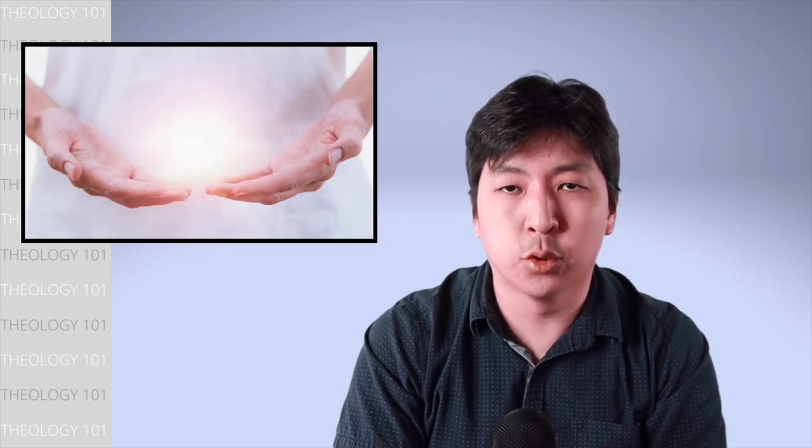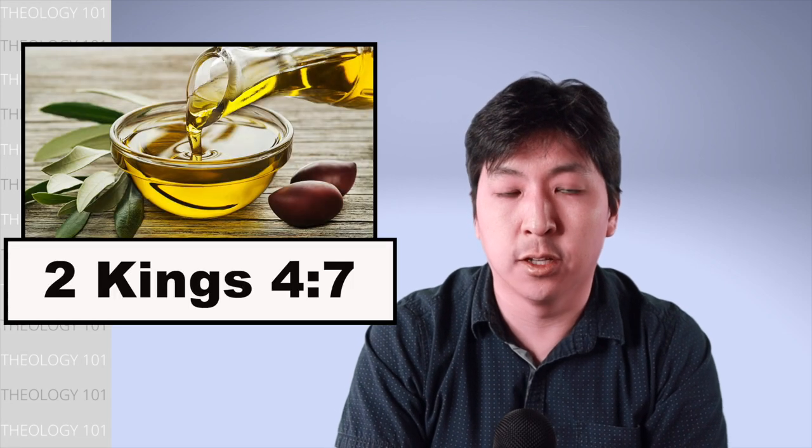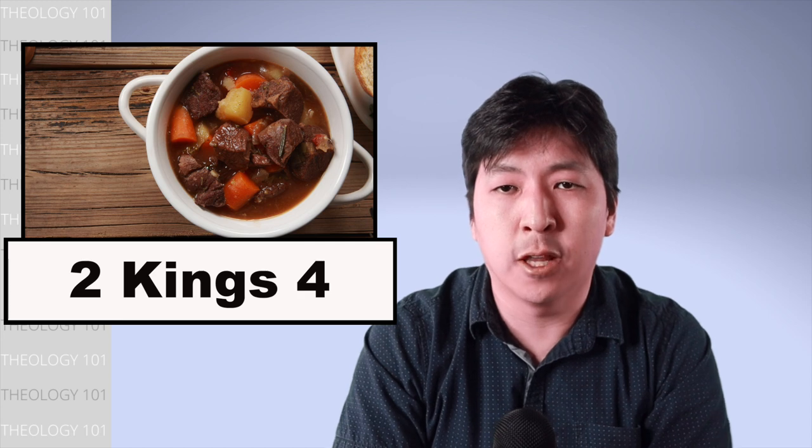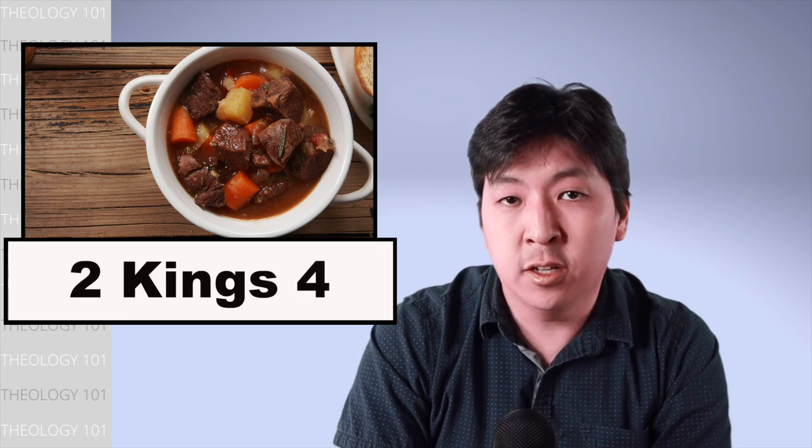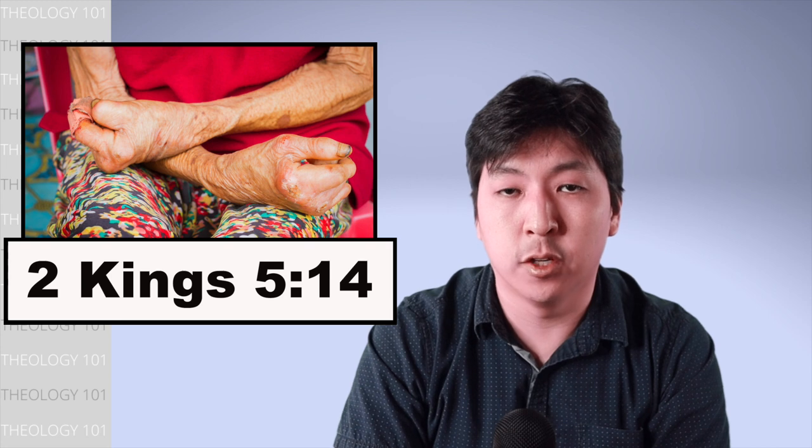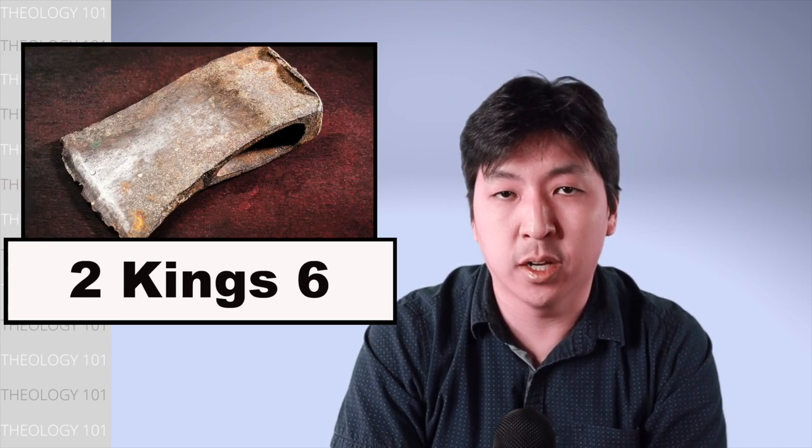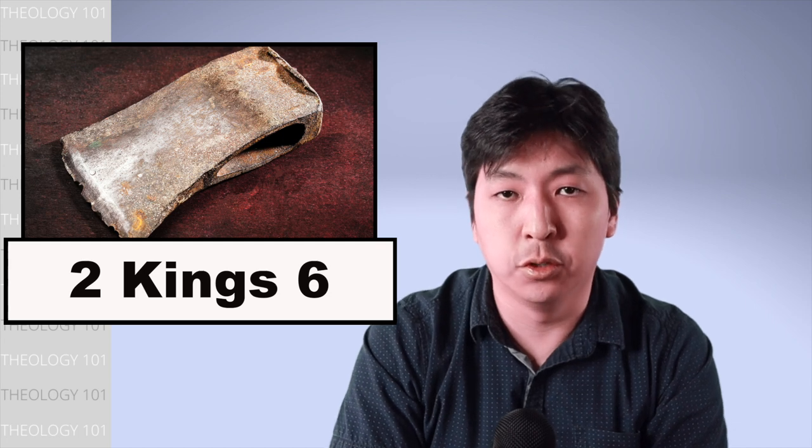Now, the camera zooms in on Elisha's ministry. Here is a list of miracles we see him perform. He provides continuous oil for a widow so she can sell it to pay her debts. He raises a woman's son from the dead. He cleans a pot of stew to allow people to eat during a famine. He heals a leper named Naaman by telling him to wash himself in the Jordan River. He makes an axe head float so that a prophet in training can recover it since he could not afford to lose it.